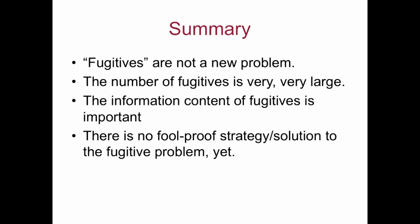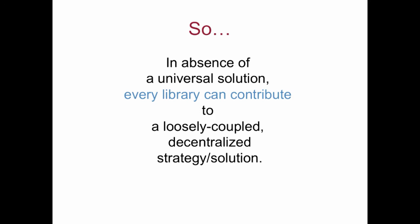To summarize this brief overview: the fugitive problem is not a new problem. No matter what the exact number of fugitives is, the number is very, very large. The information content of fugitives is important and should be available to our users and preserved for future users. And finally, there's no foolproof strategy or solution to the fugitive problem yet. Given this knowledge, how might we act?